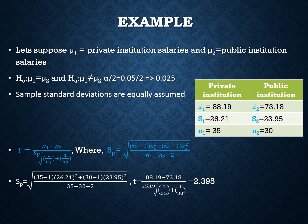The sample standard deviations are assumed equal; you can see S1 equals 26.21 and S2 equals 23.95 in the table. The t statistic equals the mean of private institutions minus the mean of public institutions, divided by the pooled standard deviation times the square root of (1/n1 plus 1/n2). The pooled standard deviation SP is calculated using the formula SP equals square root of [(n1 minus 1)S1² plus (n2 minus 1)S2²] divided by (n1 plus n2 minus 2).